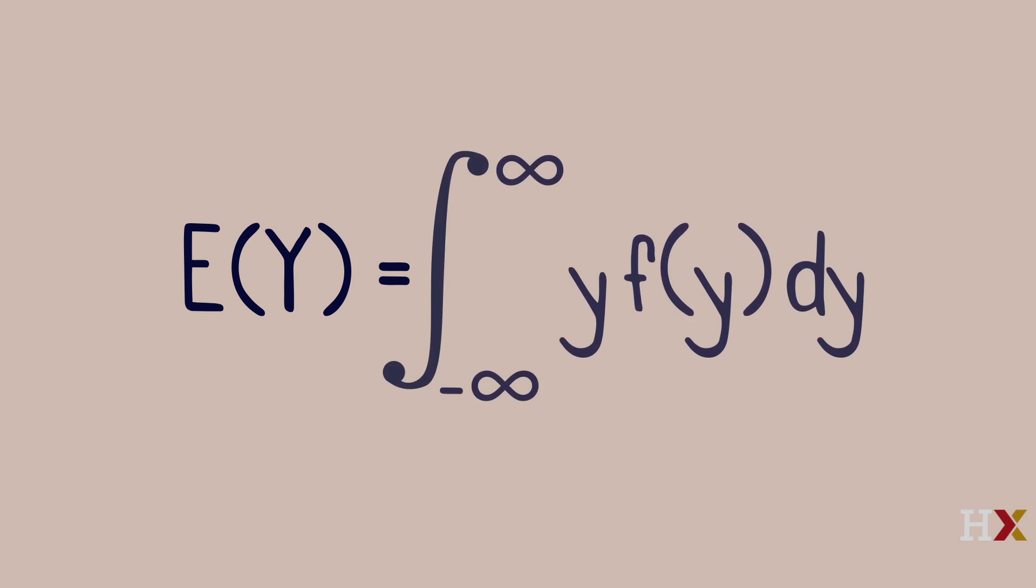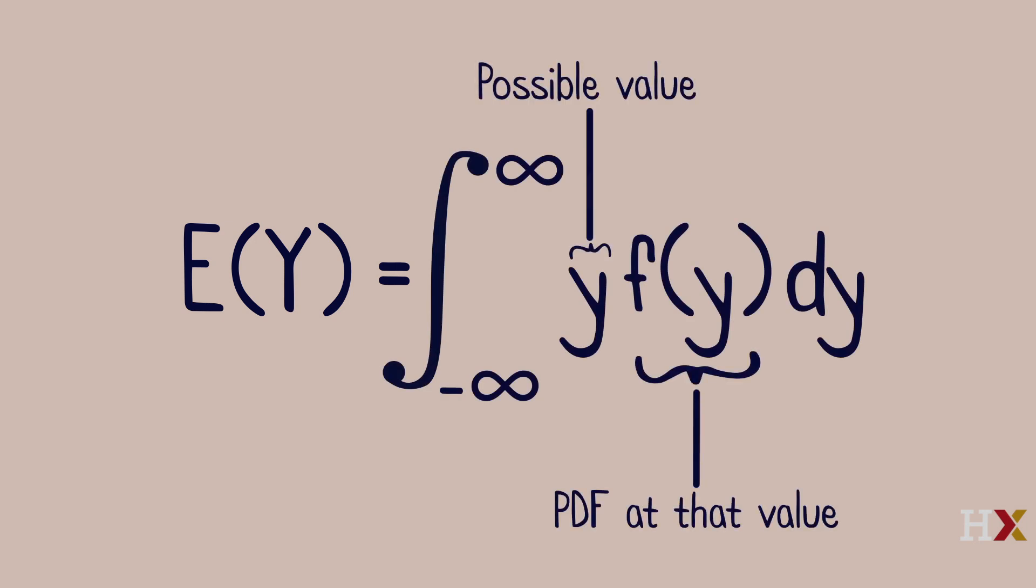It then makes sense to define the expected value of a continuous random variable Y as the integral of Y times the probability density function of Y, from minus infinity to infinity.